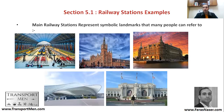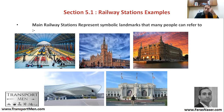Stations are symbolic landmarks that people can refer to in many cases. For example, St. Pancras station in London connects Paris to London. This is also St. Pancras from the outside. This is Haydarpaşa station in Istanbul, and another iconic station. This is Union Station in Washington, D.C., which is the headquarters of Amtrak.